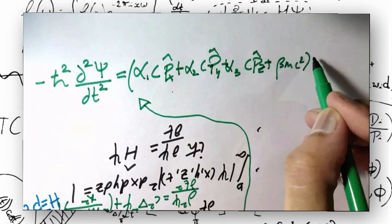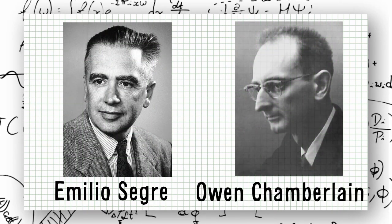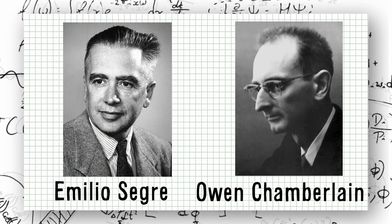All of this remained hypothetical until two scientists, Emilio Segre and Owen Chamberlain, discovered the antiproton and antineutron in 1955.